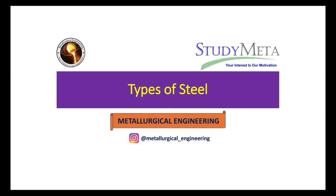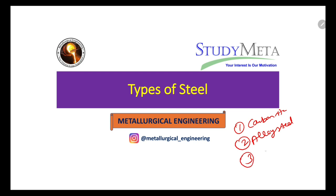Hello everyone. Today we are going to discuss the types of steel. There are mainly four types of steel: carbon steel, alloy steel, tool steel, and stainless steel.